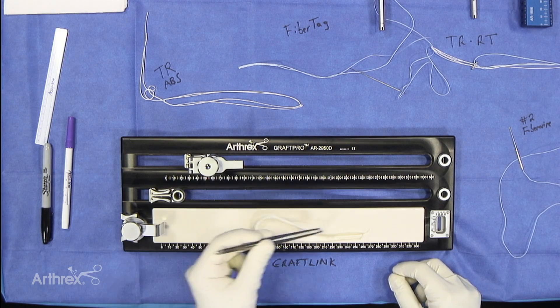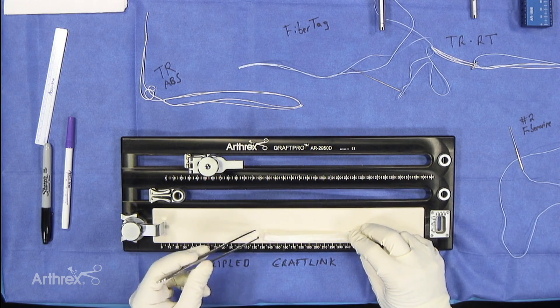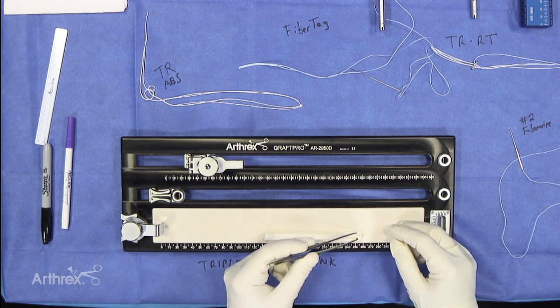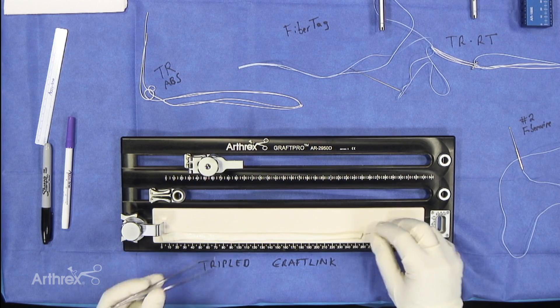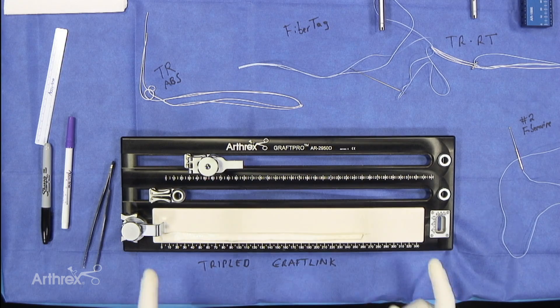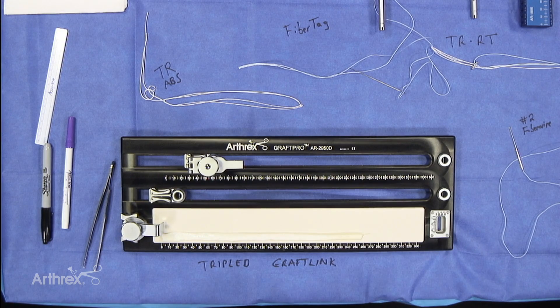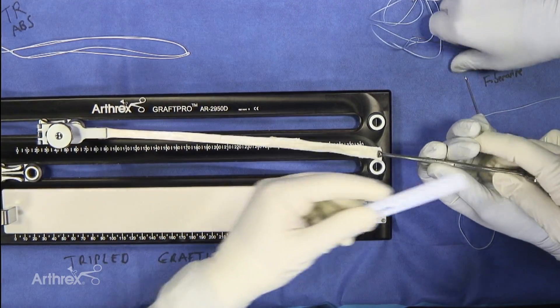And folded, when we test this, it's about nine, nine and a half. You'll see once we have it tripled, that it's going to end up hopefully being around 11 or 12 millimeters in thickness, with a total length of about 90 millimeters. Now we're going to prepare the graft with the fiber tag.